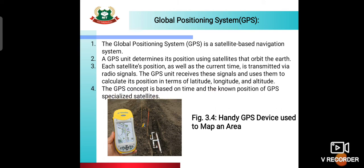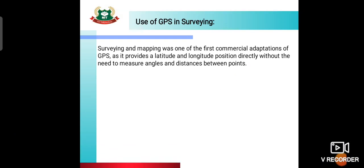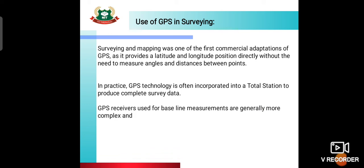The GPS concept is based on time and the known positions of specialized GPS satellites. Surveying and mapping was one of the first commercial adaptations of GPS, as it provides latitude and longitude positions directly without the need to measure angles and distances between points. In practice, GPS technology is often incorporated into a total station. GPS receivers used for baseline measurement are generally more complex and expensive, requiring high-quality antennas.